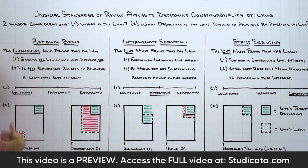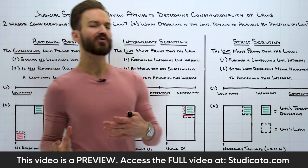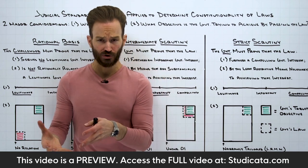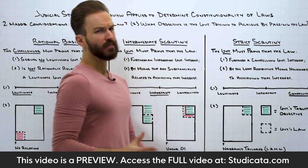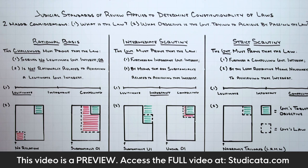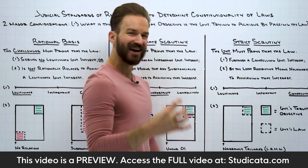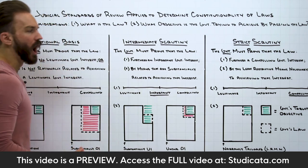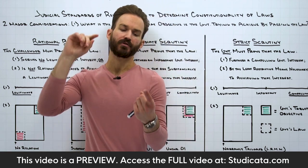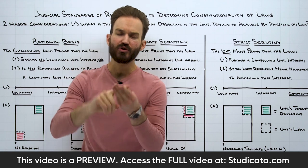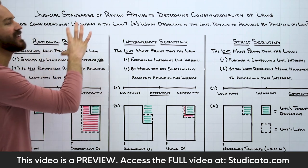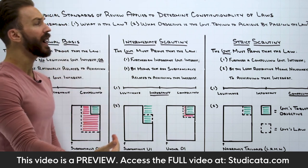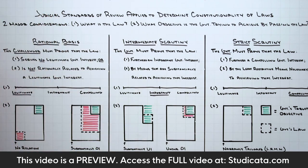These are the standards of review that courts are going to most often apply to determine whether or not a law is constitutional. So if we're looking at a law school fact pattern or a bar exam fact pattern in constitutional law, how does this play out? We're going to most often see it in the context of individual rights — think about your free speech analysis, your equal protection analysis, your due process analysis. These are where we're really going to want to have a good understanding of what these standards of review are and how to apply them to determine whether a law is constitutional or not.